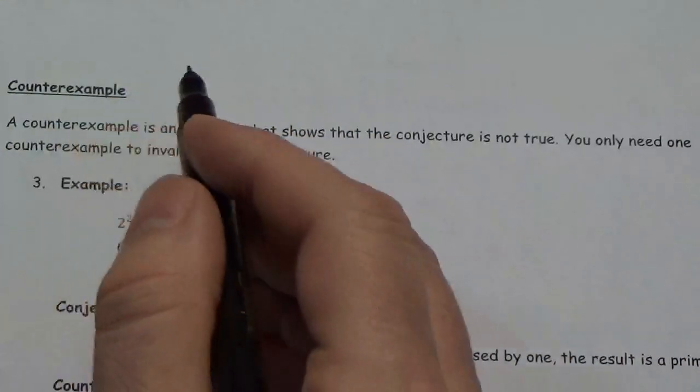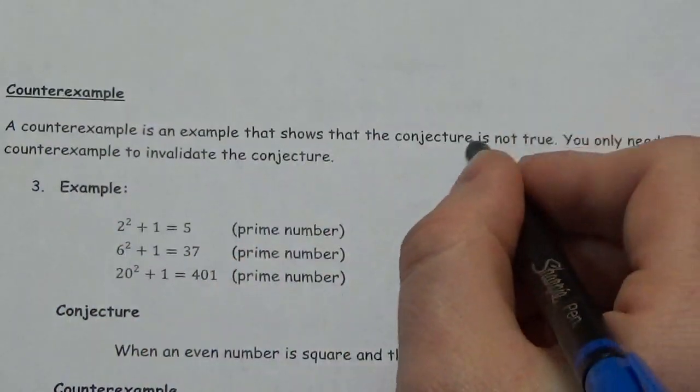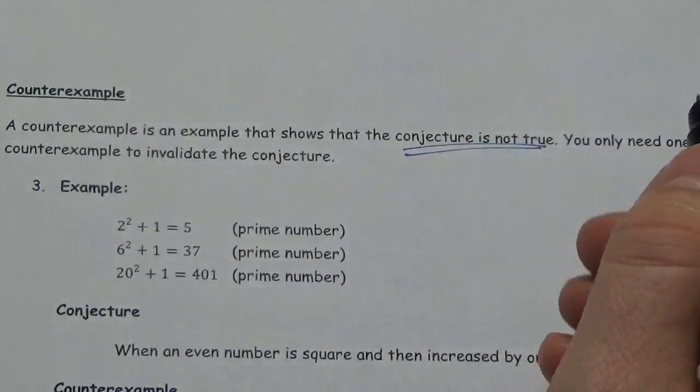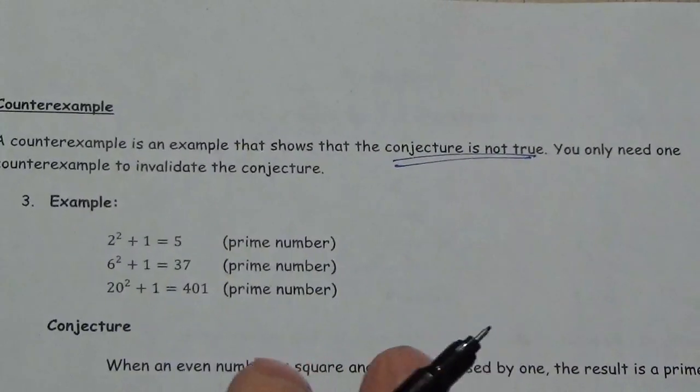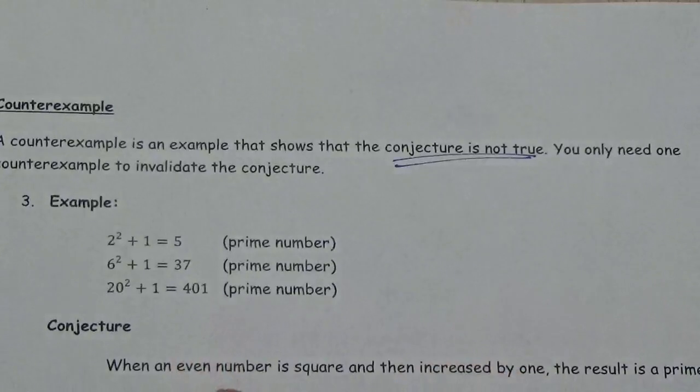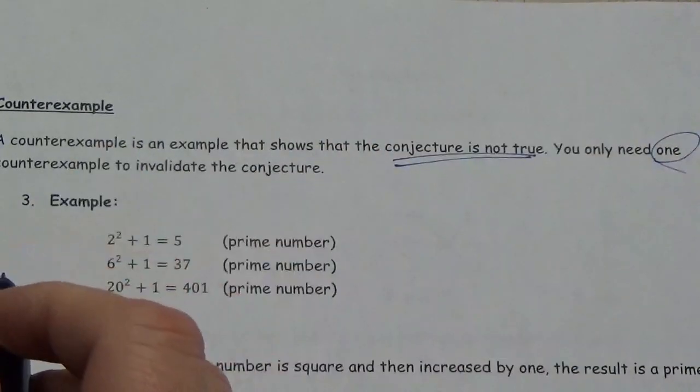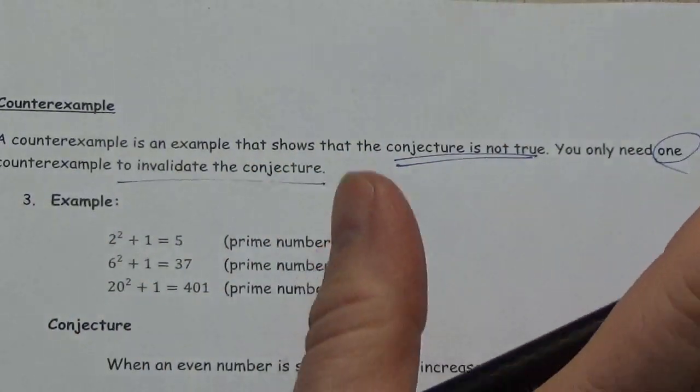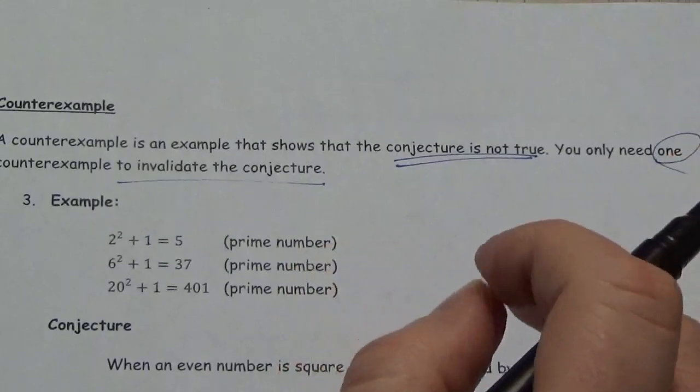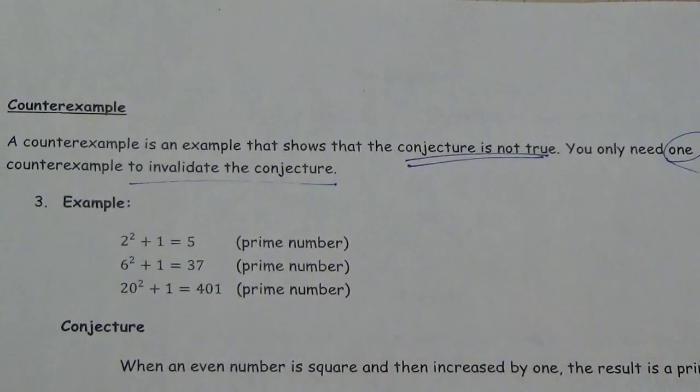Now a counterexample. So a counterexample is an example that shows that the conjecture is not true. And here's the thing, because of the way conjectures work here, remember that a conjecture takes specific examples and generalizes to a whole pattern there. All I need is one counterexample to invalidate the conjecture. If I can show one where it doesn't work, then we know that that conjecture is false. So let's take a look at some examples of that.